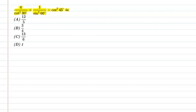So let's start. We will find the value of 4 upon cos square 30 plus 1 upon sin square 60 minus cos square 45 degree.